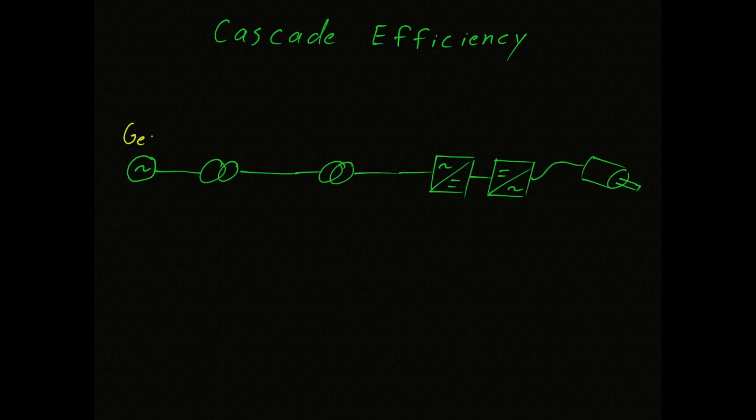We start with a generator on the left. The generator feeds a pair of transformers. Now these transformers work together to allow the voltage to be transmitted a long distance. Basically one transformer steps the voltage up, thereby reducing the current. The other transformer steps the voltage down.